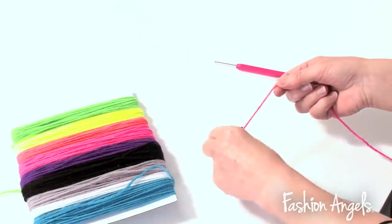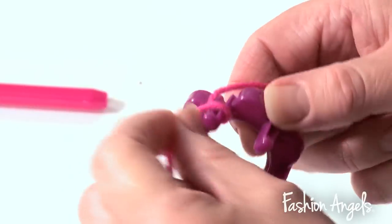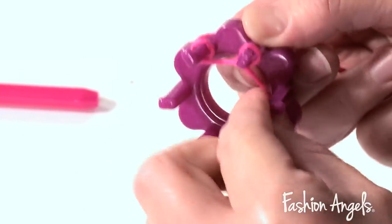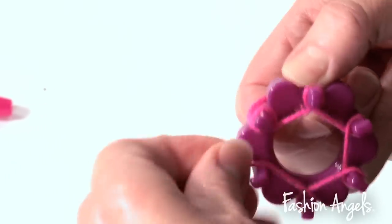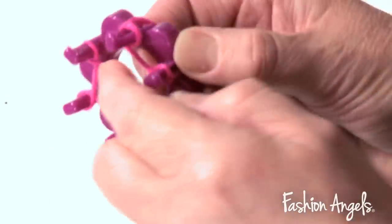Once you've wrapped it around the peg, keep wrapping it around all the other pegs and then make a second row of loops as well.